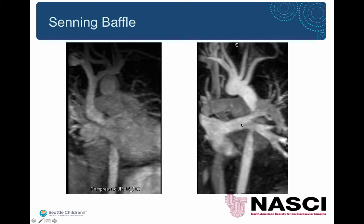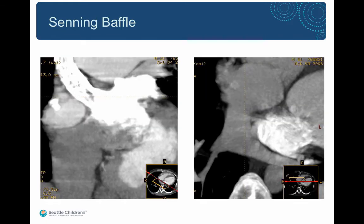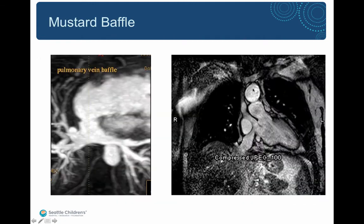On the right-hand side image you see the pulmonary veins draining into the right atrium. Another example of a Senning baffle shows the contrasted blood in the superior vena cava draining into the left atrium along with non-contrasted blood mixing in the left atrium, and on the right-hand side the pulmonary veins draining into the right atrium. Here's an example of a Mustard baffle with similar results — pulmonary veins draining into the right atrium and systemic veins draining into the left atrium.